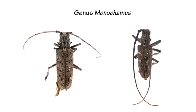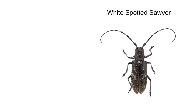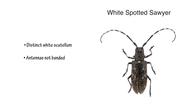One common pine sawyer in the area often mistaken for Asian Longhorn Beetle is the white spotted sawyer, which is similar in size but the markings tend to be much reduced on the elytra. There is also a distinct white scutellum — a white spot at the very base of the elytra — and the antennae are not banded like they are in Asian Longhorn Beetle.